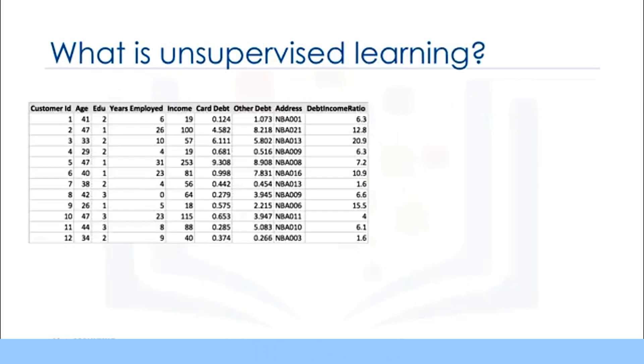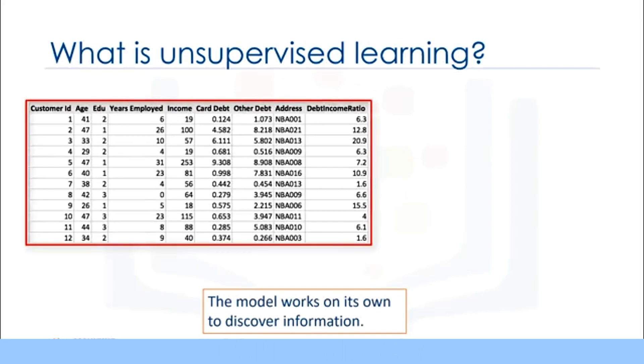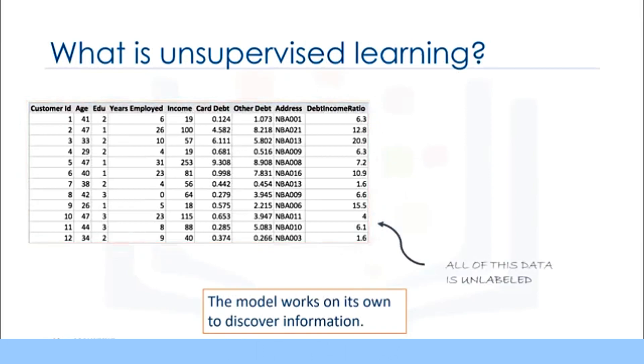Since we know the meaning of supervised learning what do you think unsupervised learning means? Yes unsupervised learning is exactly as it sounds. We do not supervise the model but we let the model work on its own to discover information that may not be visible to the human eye. It means the unsupervised algorithm trains on the data set and draws conclusions on unlabeled data. Generally speaking unsupervised learning has more difficult algorithms than supervised learning since we know little to no information about the data or the outcomes that are to be expected.